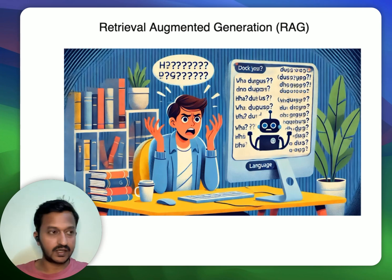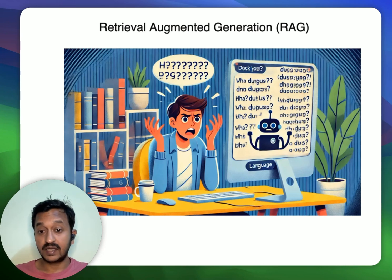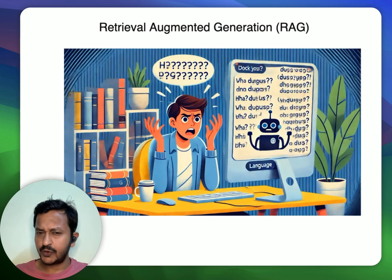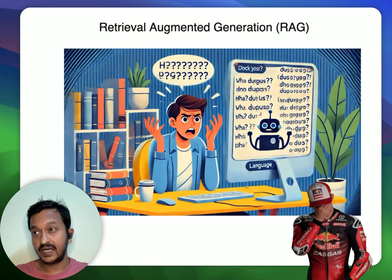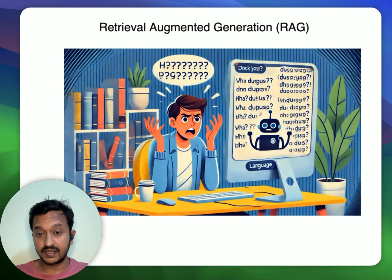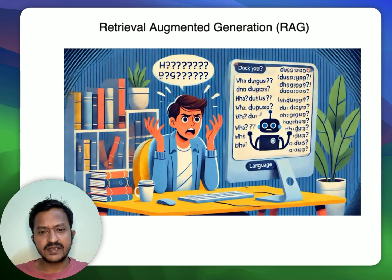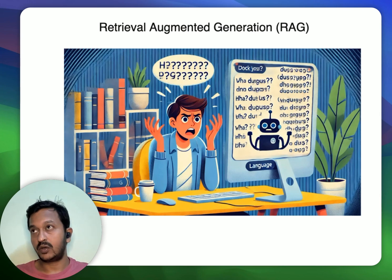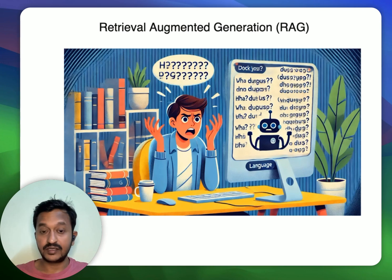Everything is good, but we need to understand one thing: these LLMs, large language models, sometimes hallucinate. These large language models sometimes produce answers that are not correct — incorrect answers. Sometimes they produce responses that are biased, and sometimes also kind of made-up answers. There are many reasons for this hallucinating behavior of large language models, one of which is the quality of data that these LLMs are trained on, and the cutoff date is also important.